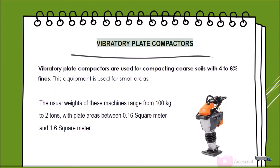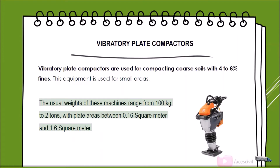Vibratory plate compactors are used for compacting coarse soils with 4 to 8 percent fines. This equipment is used for small areas. The usual weights of these machines range from 100 kg to 2 tons, with plate areas between 0.16 square meters and 1.6 square meters.